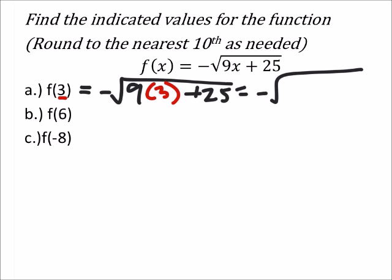A negative square root of 9 times 3 is 27, plus 25 would be 52. So, in my calculator,